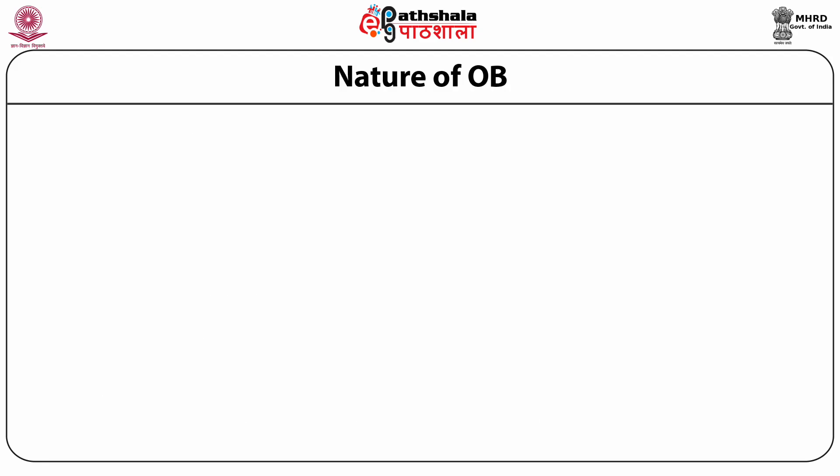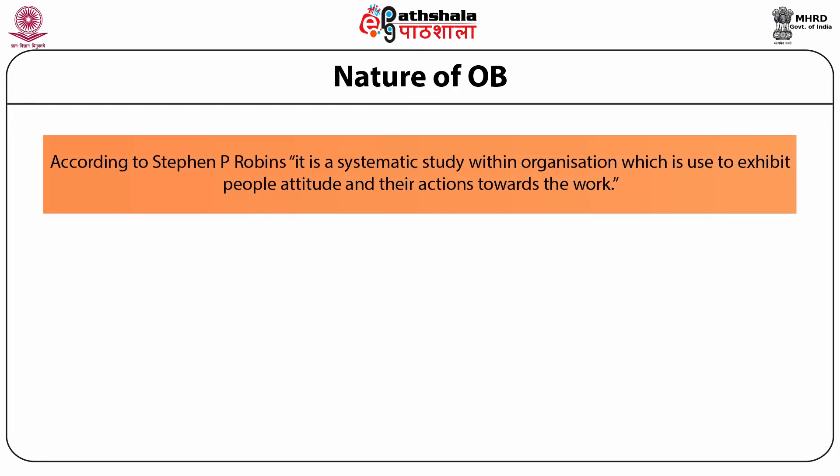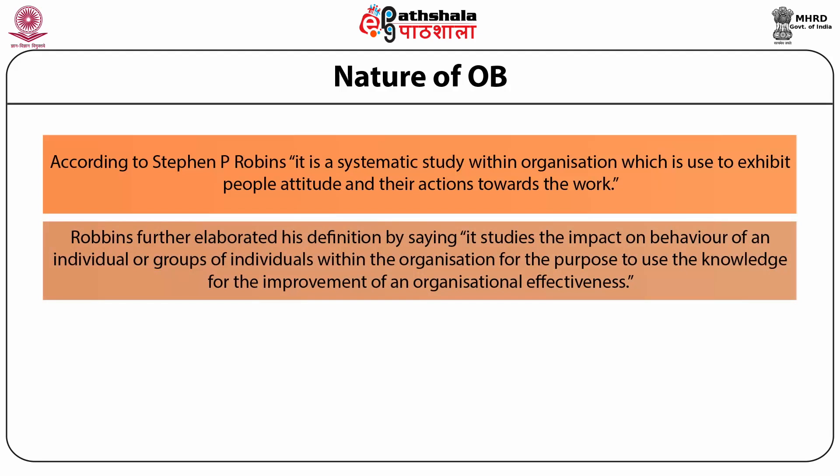VG Kundalkar defined OB as the study to investigate the impact of behavior on an individual, group of individuals, and organizational structure within the organization, with focus to enhance and apply such knowledge for organizational effectiveness. He divided the definition into three key elements: OB as an investigative study; the impact of OB studies on human behavior; and the proper utilization of knowledge to achieve organizational goals. LM Prasad defined OB as the study of human knowledge related to elements of an organization such as internal and external environment, social system, technology, and their flexibility to fit in the organization.